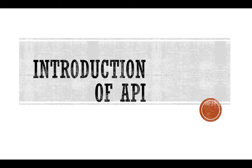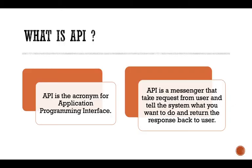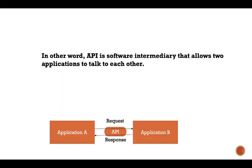Hello everyone, now we will discuss about API in this video. First we learn what is API. API is the acronym for Application Programming Interface. As the name suggests, API is a messenger that takes a request from the user, tells the system what you want to do, and returns the response back to that user. In other words, we can say API is a software that allows two applications to talk with each other.